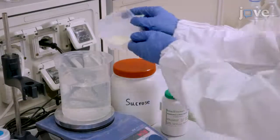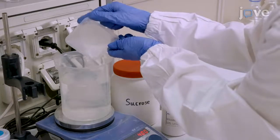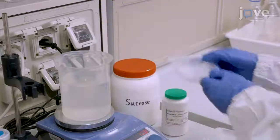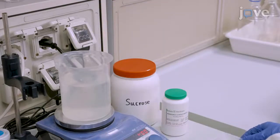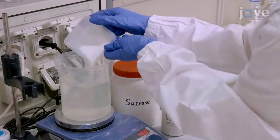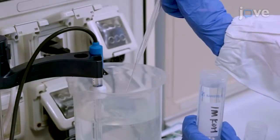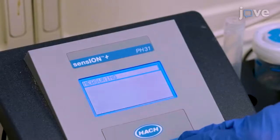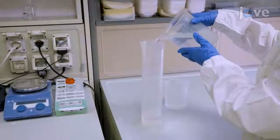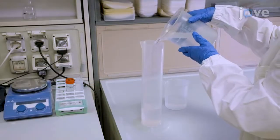Next, prepare half-strength Murashige and Skoog medium by adding 2.2 grams of MS medium powder, including vitamins, and 10 grams of sucrose in 800 ml of distilled water. Adjust the pH of the medium to 5.7 using 1 molar potassium hydroxide, then bring the volume up to 1 liter using distilled water.